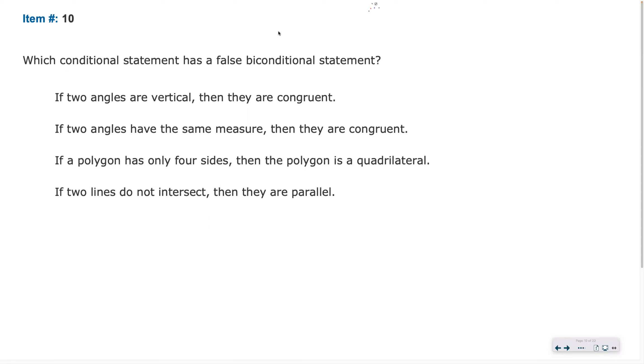All right, here we go. So biconditional, the way it means is that the statement itself and its converse won't always be true at the same time. That's basically the idea that it's not true both ways, one or the other, okay?